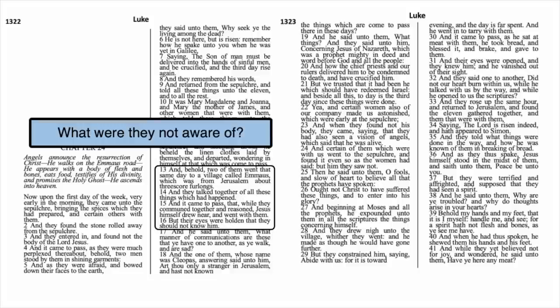Luke 24:13–16: 'Two of them went that same day to a village called Emmaus, which was from Jerusalem about threescore furlongs. And they talked together of all these things which had happened. And it came to pass that while they communed together and reasoned, Jesus himself drew near and went with them. But their eyes were holden that they should not know him.' They're not aware that Jesus is walking with them. Their eyes were holden — a double meaning: they don't recognize him physically, and they don't yet recognize him spiritually as the Messiah.